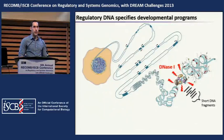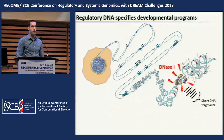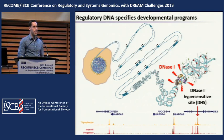As Daniel introduced yesterday, we can map these regulatory elements because they are uniquely hypersensitive to the nonspecific endonuclease DNase 1. If we sequence the short fragments released by this enzyme when we treat nuclei with DNase 1 and align them to the genome, we can get a quantitative genome-wide view of transcription factor occupancy in different cell types. In my talk I'll be using 'regulatory element' and 'DNase 1 hypersensitive site' or DHS interchangeably.